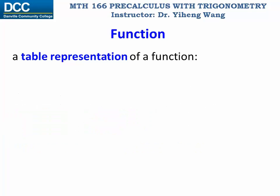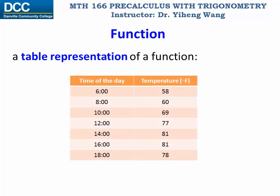A function can be described using a table as well. For example, many of us might check the weather broadcast every day and see a table which tells us what the temperature is at different times of the day. In this case, the temperature changes depending on what time it is, not the other way around. Therefore, the time here is the independent variable, and the temperature is the dependent variable.